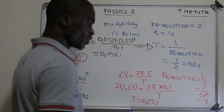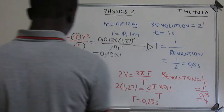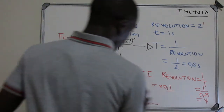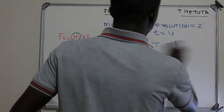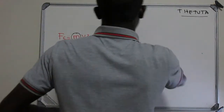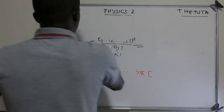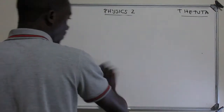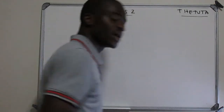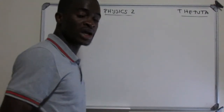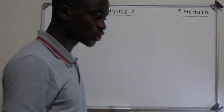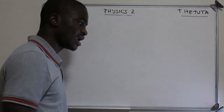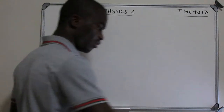Now let's look at question 3 and see what happens there, as it deals with the same concept of horizontal circular motion. In our next video we will talk about the problem of vertical circular motion.